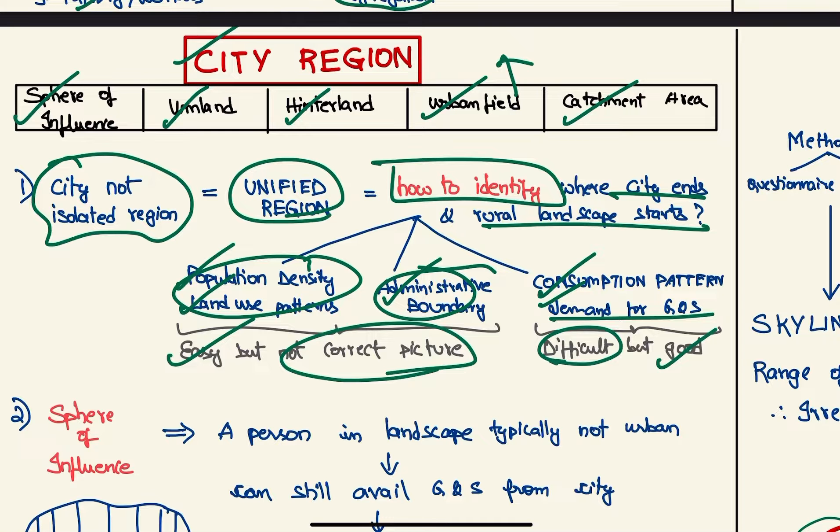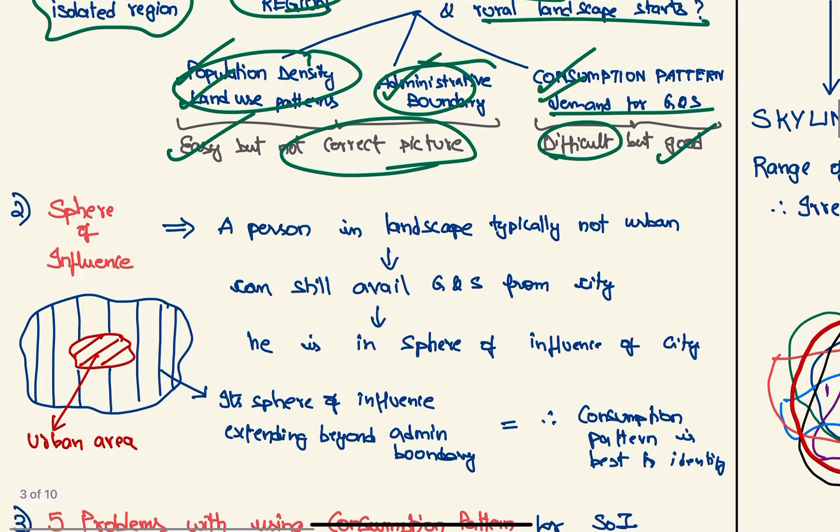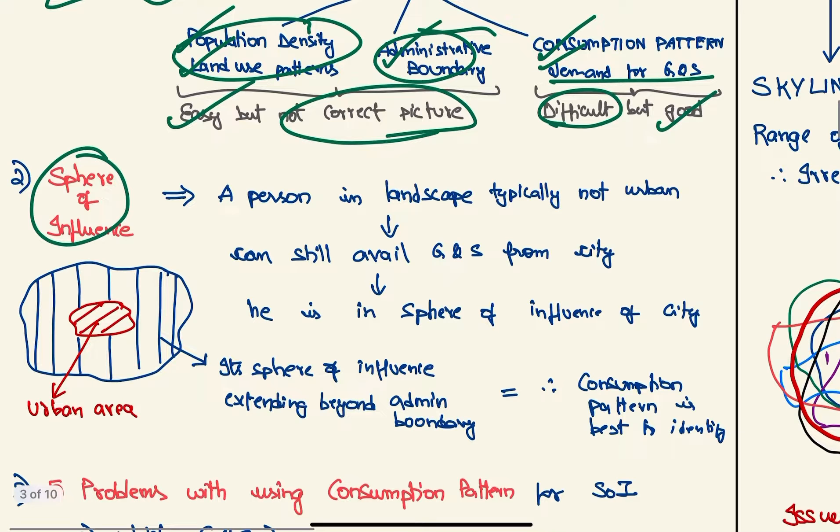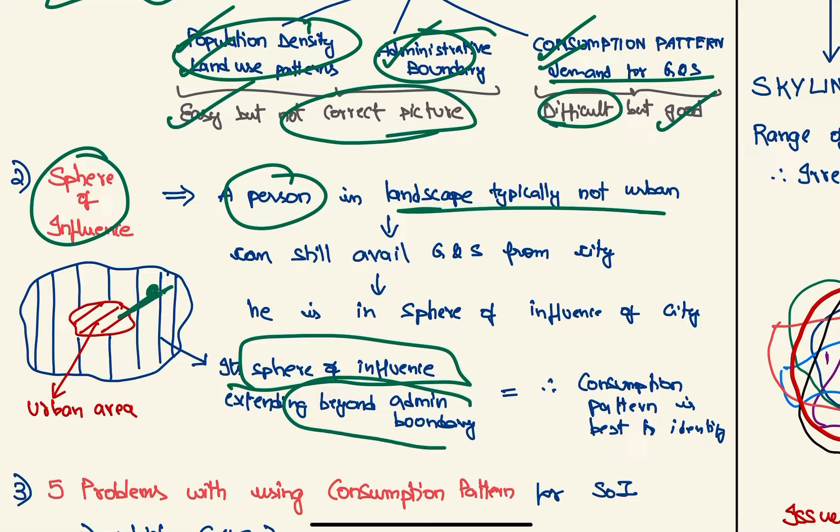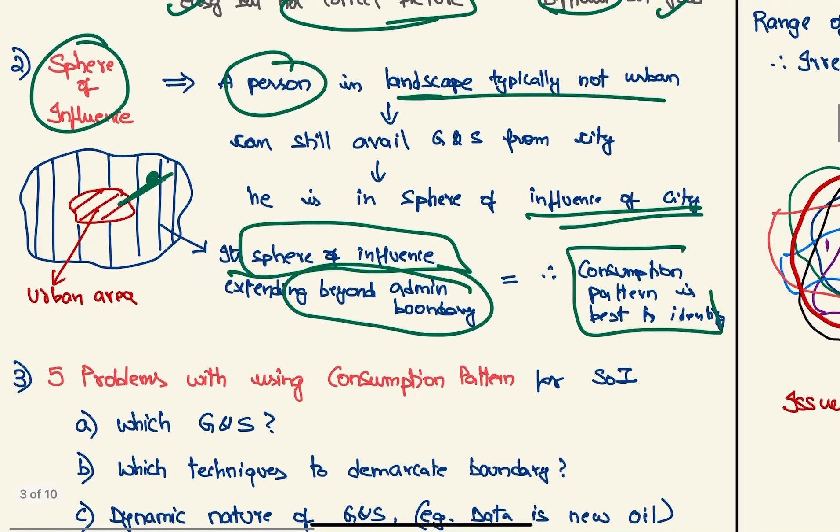The first two methods are very easy but they do not give the correct picture. This method is very difficult but it gives a better picture of the sphere of influence. If a person living in the rural landscape is able to get services from the urban area, then he is said to be living in the sphere of influence of that city.